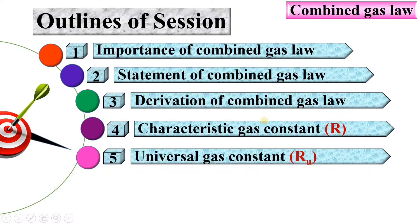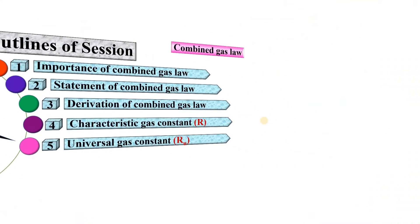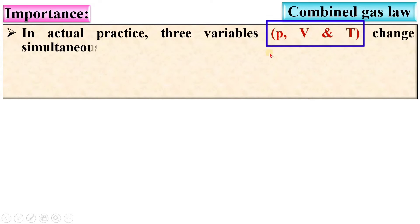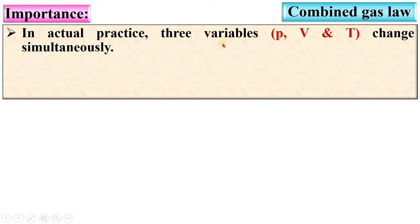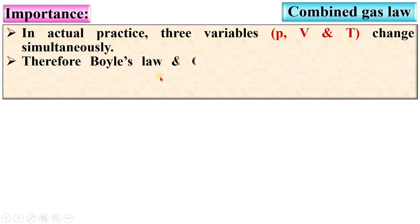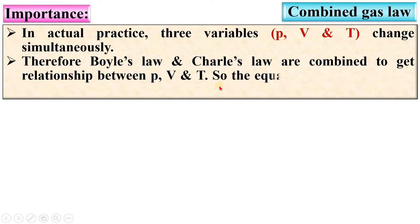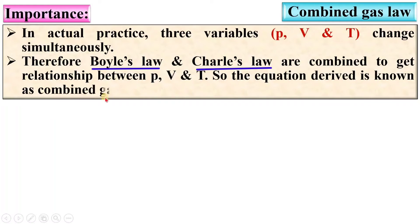Let us see the importance of the combined gas law. In actual practice, three variables — pressure, volume, and temperature — change simultaneously. In Charles' law the pressure is constant, and in Boyle's law the temperature is constant. But in actual practice these three variables change simultaneously. Therefore, Boyle's law and Charles' law are combined to get a relationship between pressure, volume, and temperature. The equation derived is known as combined gas law.